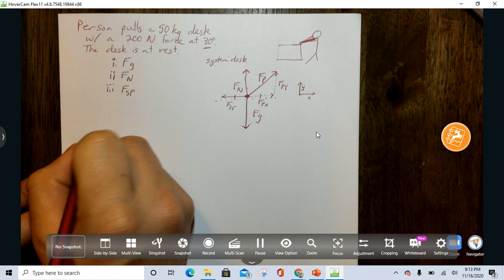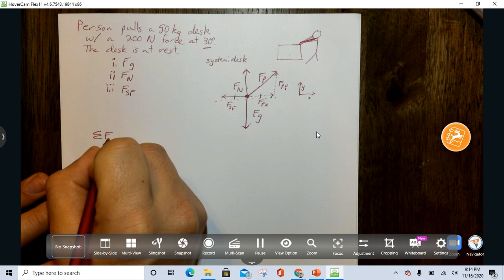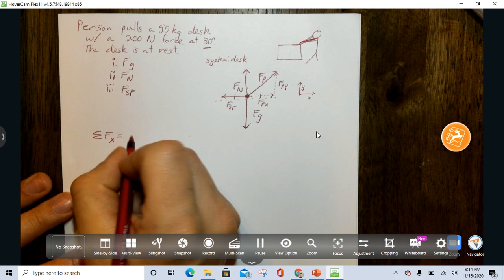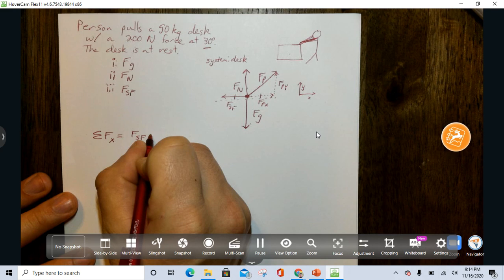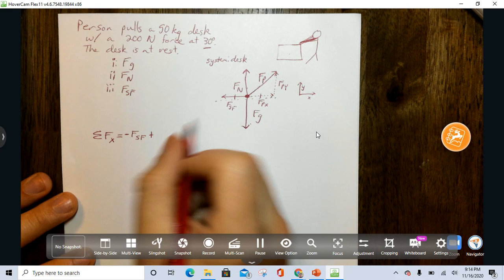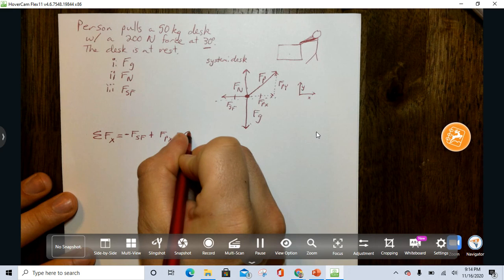Then, we make our equation. We'll make them over here. Forces, let's start in the X direction, equal. We've got force of static friction minus, sorry, negative force of static friction plus FPX, and it's going to equal zero newtons.